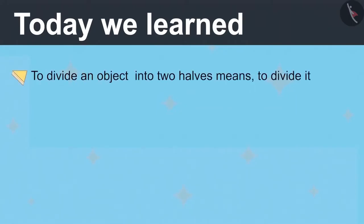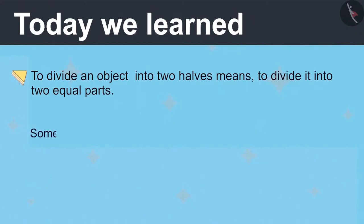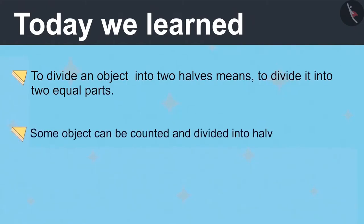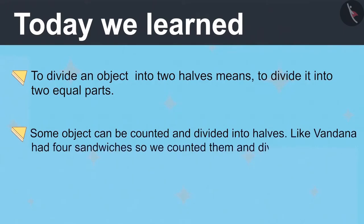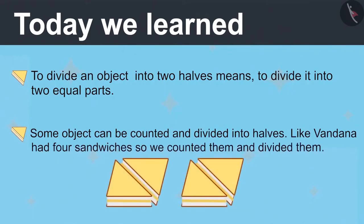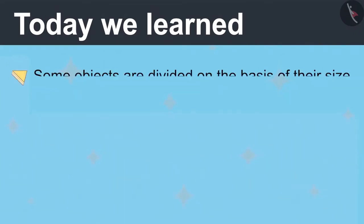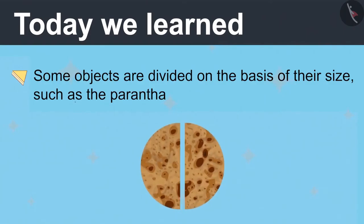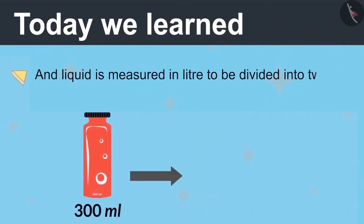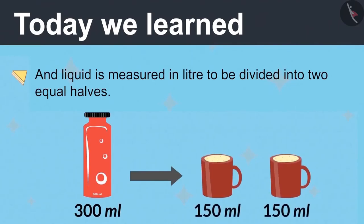Today we learned that to divide an object into two halves means to divide it into two equal parts. Some objects can be counted and divided into halves, like Vandana had four sandwiches, so we counted them and divided them. Some objects are divided on the basis of their size, such as the paratha. And liquid is measured in liter or milliliter to be divided into two equal halves.